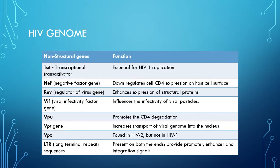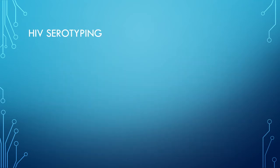Non-structural genes include: tat gene, essential for HIV-1 replication; nef (negative factor gene), which down-regulates CD4 expression on the host cell surface; rev (regulator of virus gene), which enhances expression of structural proteins; vif (viral infectivity factor gene), which influences infectivity of viral particles; vpu, which promotes CD4 degradation; vpr, which increases transport of the viral genome into the nucleus; vpx, found in HIV-2 but not HIV-1; and LTR (long terminal repeat), present at both ends providing promoter, enhancer, and integration signals.